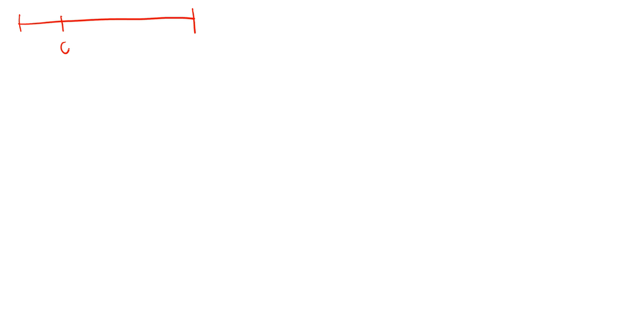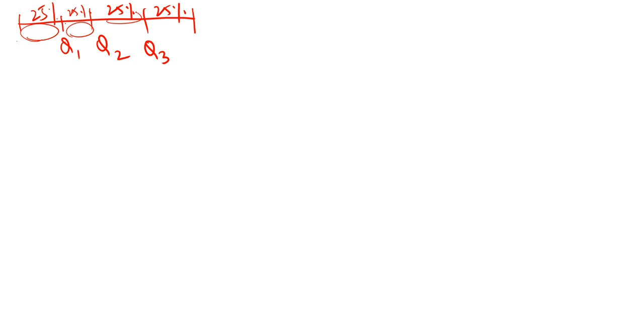Let's understand what quartiles are. Quartiles divide our entire distribution into four equal parts: Q1, Q2, and Q3. Q1 contains 25% of the data from the beginning to Q1, then Q1 to Q2 contains 25%, and similarly 25% each for the remaining two intervals. So our entire data is divided into four equal parts based on observations.